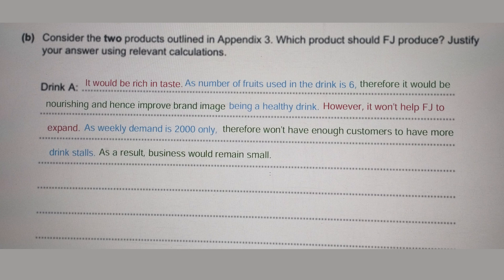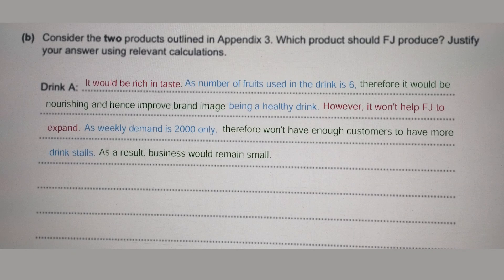However — now going to the disadvantage of Drink A — 'it won't help FJ to expand' — that is the knowledge part. 'As weekly demand is 2,000 only' — that is application. 'Therefore it won't have enough customers to have more drink stalls' — that is analysis, showing the business would remain small and their desire to expand won't be fulfilled. You can use application on one or two occasions; it's entirely up to you.